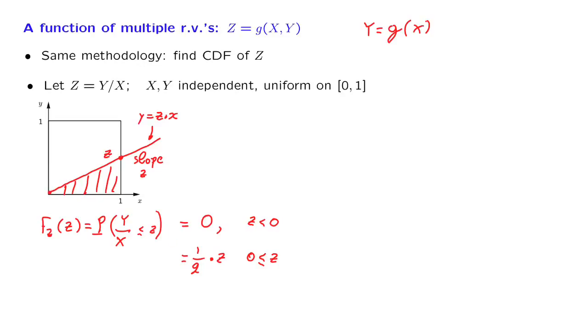Well, not really. This calculation was based on this picture. And in this picture, this line intercepted this side of the unit square. And for that to happen, this slope must be less than or equal to 1. So this formula is only correct in the case where we have a slope of less than or equal to 1. And now we need to deal with the remaining case, in which little z is strictly larger than 1.